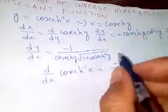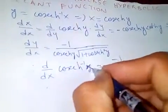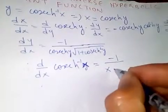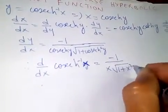...one. Cosecant is one over x times square root of one plus x square.